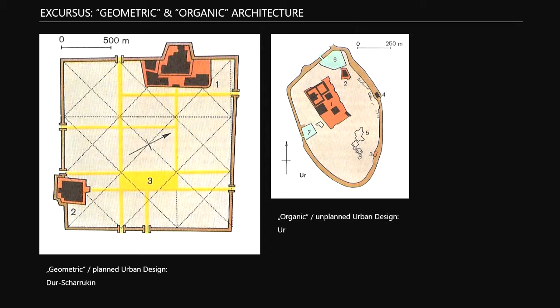In Mesopotamia, we had both. On the left side, as I explained last time, is a floor plan of the ideal city Dur-Sharukin in the north, in the Assyrian. It's planned - a nearly perfect square. They put intentionally the government buildings near the walls, outside the city, thinking it's safer to defend. They planned the streets as a grid and planned the neighborhood. This I would call geometric. In urban design, you have both: geometric planned cities and organically grown unplanned ones.